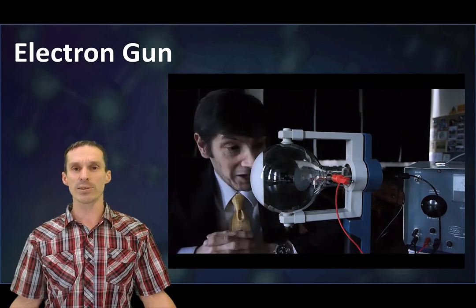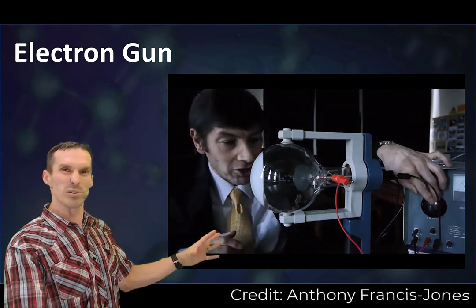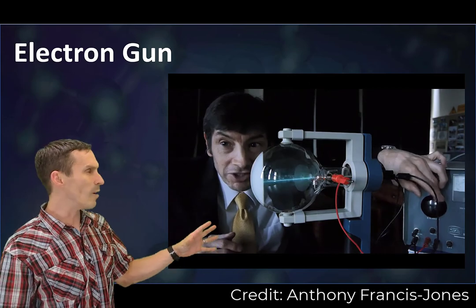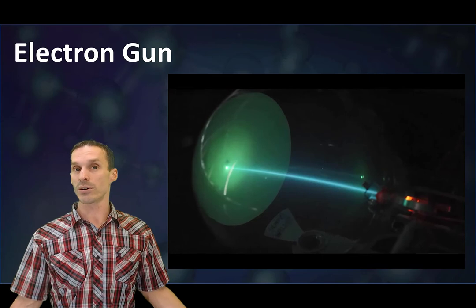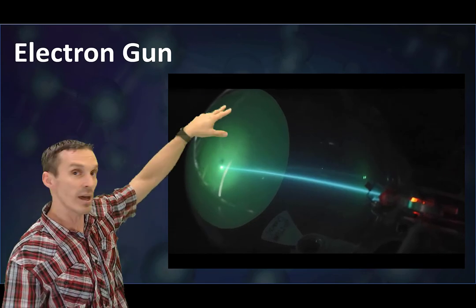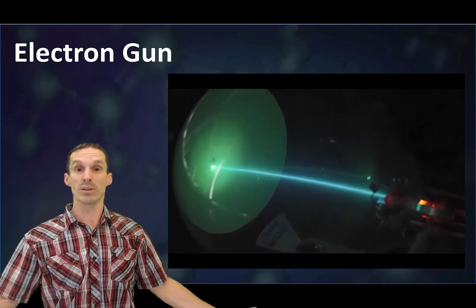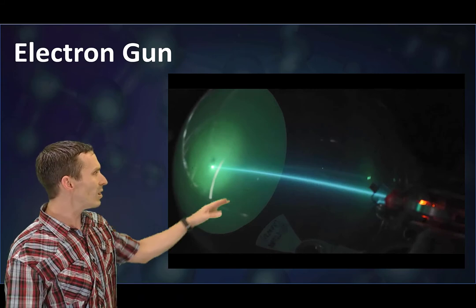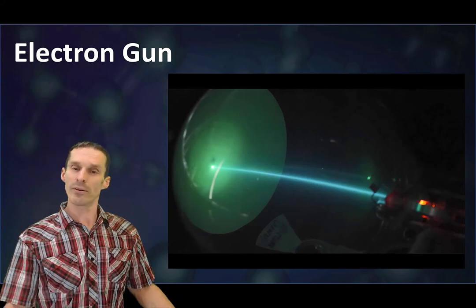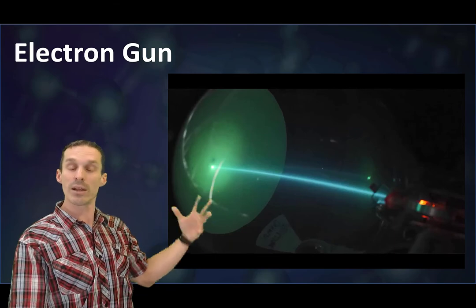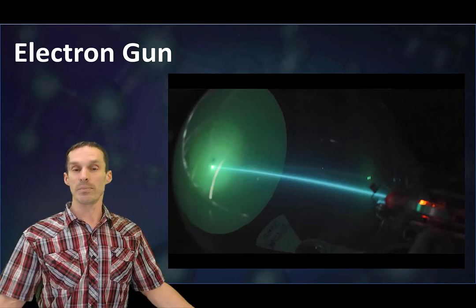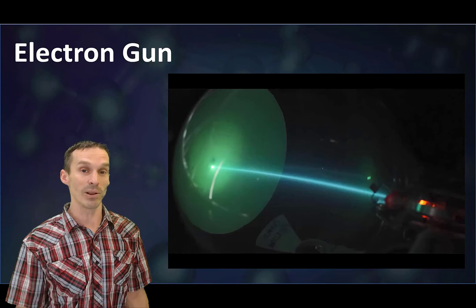This is the same process that happens inside of those old-school TVs, the big fat ones. There's an electron beam being directed at a screen, and you can point that around to different dots on the screen and that's what lights it up. By the way, the glow you're seeing in there, the electron beam would be invisible, but it's going through some gas and that's why we see it as this laser-like looking beam.